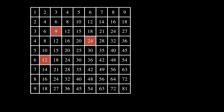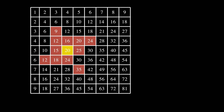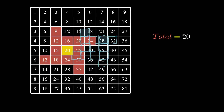It even works when the squares are slant, like this. This observation gives us a recipe for finding the grand total of all numbers inside any shape with central symmetry — we simply multiply the central number by the number of elements in our shape.